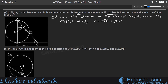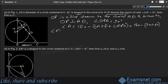In triangle AOP, using the angle sum property: angle A = 180° − (90° + 60°) = 180° − 150° = 30°. So angle A = 30°.